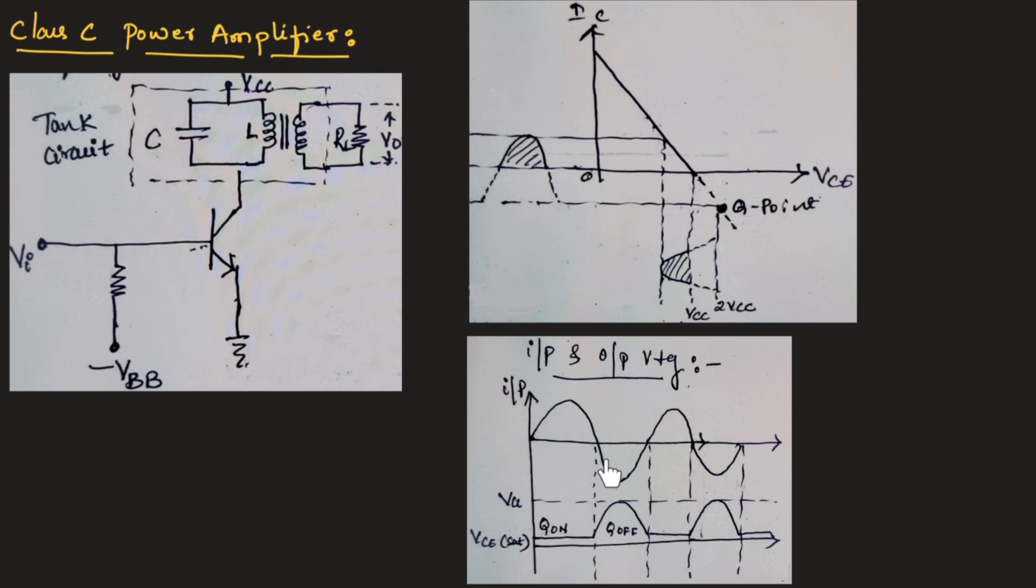During negative half of the input, the transistor will be off. That is why the voltage across the load resistor will be whatever input signal is received by the transistor. During positive half of the input cycle, transistor will be on. That is why we will get the output waveform, which will be equal to the input signal.